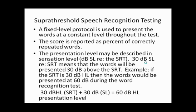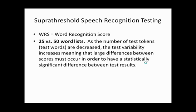Word recognition scores may use 25-word or 50-word lists. As the number of test tokens decreases, test variability increases, meaning larger differences between scores are needed to achieve a statistically significant difference between test results.